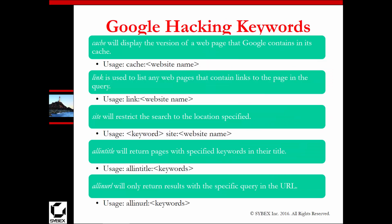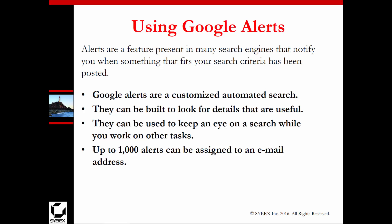You can actually do things like a link colon and a website name, or site colon and a website name, or specific URLs — because there's a lot that Google is pulling from that you can leverage. It just depends on what you're trying to accomplish. Google also has what's called Google Alerts that are customizable and built to look for details that are useful.